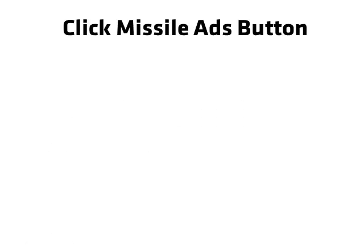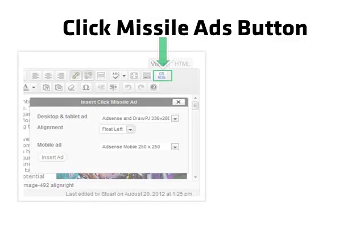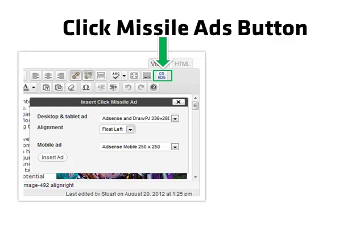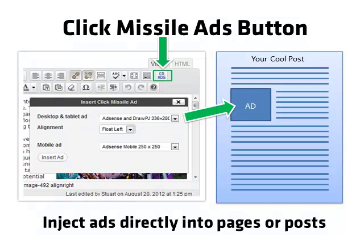First up is the simplest way to place specific ads into a WordPress post — it's the Click Missile ads button. Click it and you can inject an ad directly into your page or post exactly where you want it to appear. You can even set the ad alignment so that your ad sits nicely within your post.